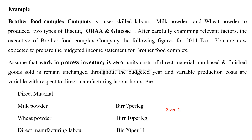Assume that Brother Food Complex Company uses skilled labor, milk powder, and wheat powder to produce two types of biscuits: Aura and Glucose Biscuits. So let's see — here is Brother Food Complex.